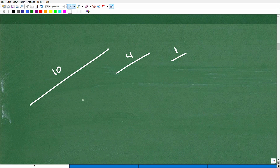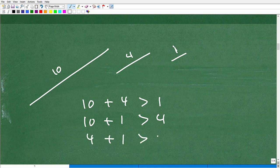10 plus four, that's going to be greater than one. Okay. So we'll use these two. I'm just looking at different combinations here. But if I do 10 and one, is that greater than four? Yep. 10 plus one, that's greater than four. But here's the problem. How about four plus one? Is that greater than 10? No.